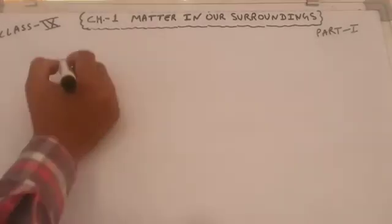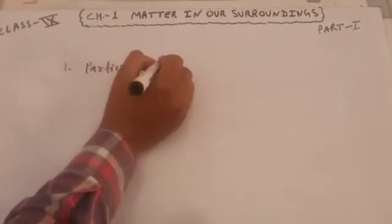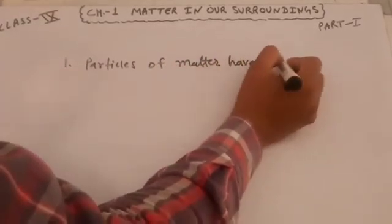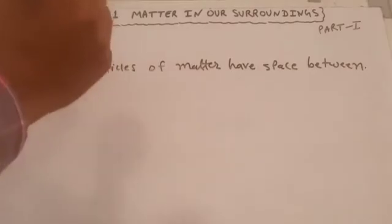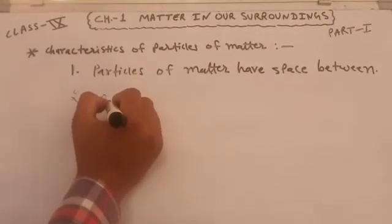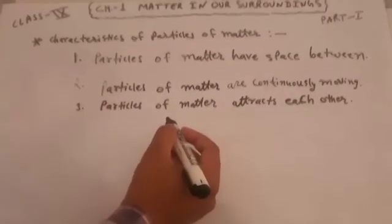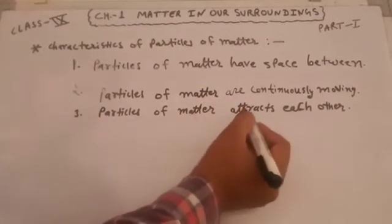And now we are going to discuss the characteristics of particles of matter. First characteristic is particles of matter have space between them. Second characteristic is particles of matter are continuously moving. And third characteristic is particles of matter attract each other.